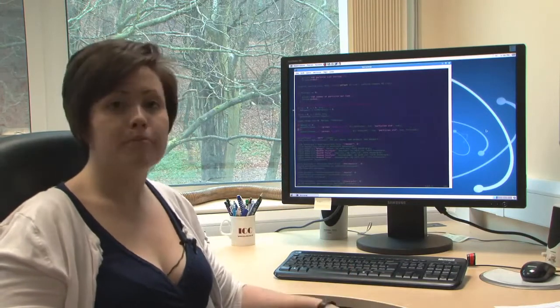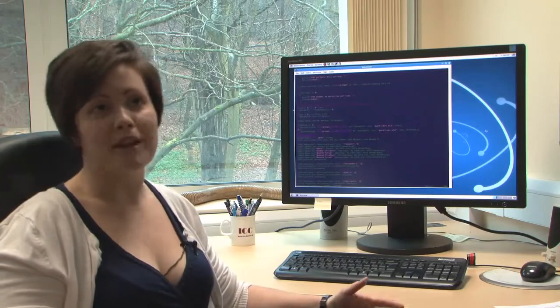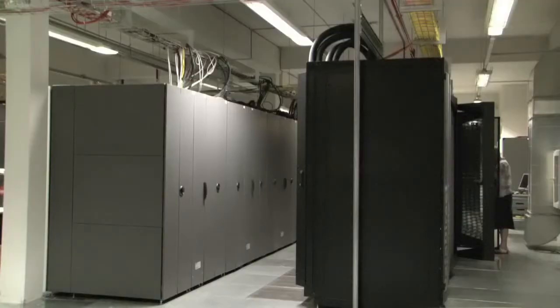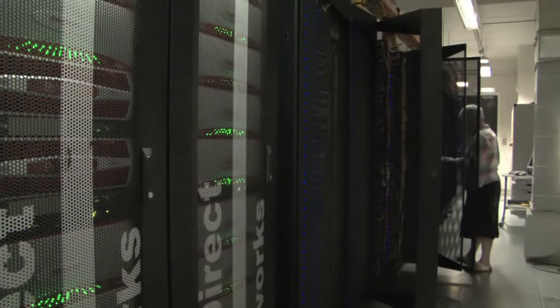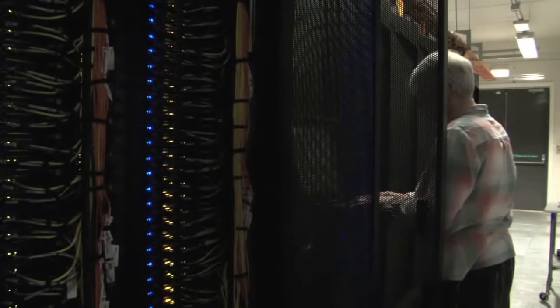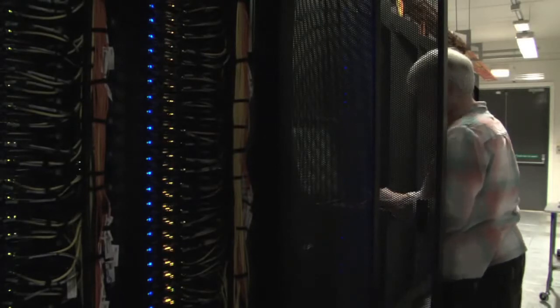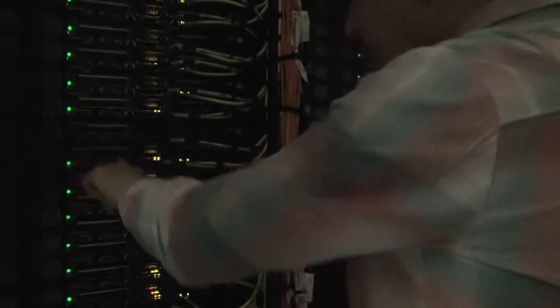We use computers both like this one here but also massive supercomputers. This supercomputer here in Durham is the most powerful in the UK dedicated to astronomy and cosmology. In one second it can do over 140 trillion basic calculations. The power of this computer would be the equivalent of about 6,000 individual desktops. Even with this speed though, it can still take several weeks or even months to complete one of our simulations.